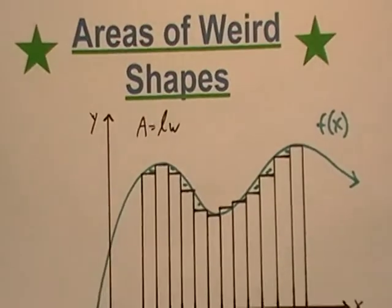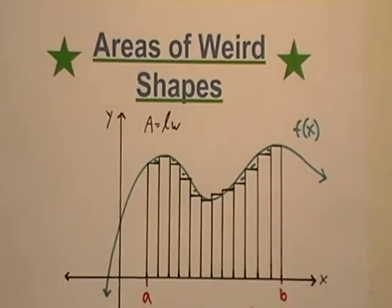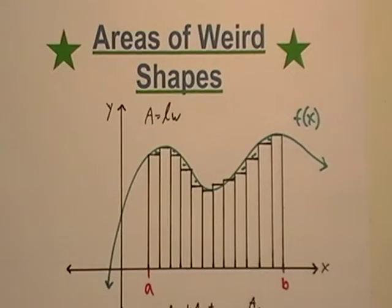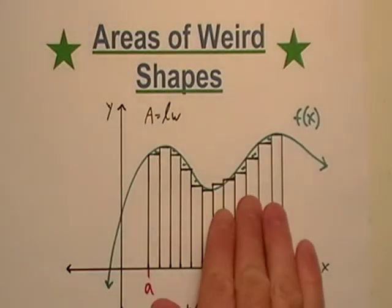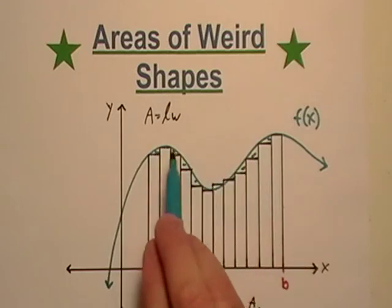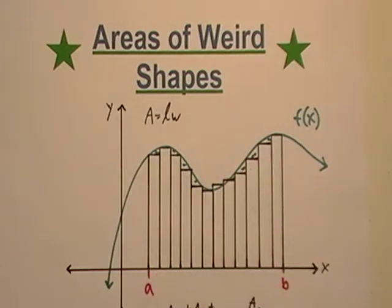Next thing we can do is areas. We can find areas of things. So you have an area under here, and I can just fill it in with rectangles. Now, these little blue dots make this an approximation, but hey, that's pretty much the way calculus starts out. We start out with an approximation, and then we work our way down and see if we can't make things better.